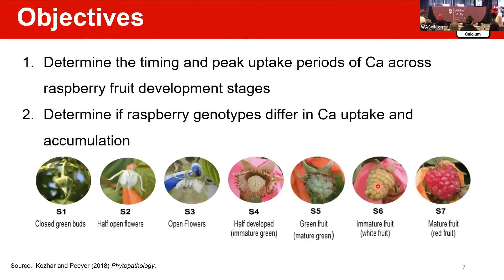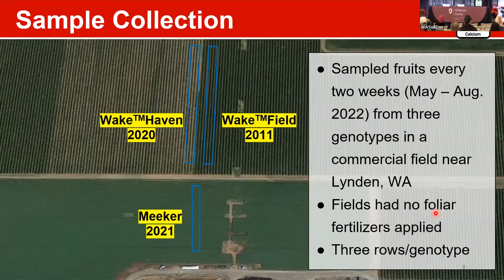Our objective in this research is to determine the peak uptake period of calcium across the raspberry fruit development stages, between S1 — green buds — and S7, when we have mature fruit. Another objective is to determine whether raspberry genotype affects calcium uptake and accumulation. Sample collection was performed every two weeks between May and August 2022 from three fields with three genotypes: Meeker, Wakefield, and Wakehaven.